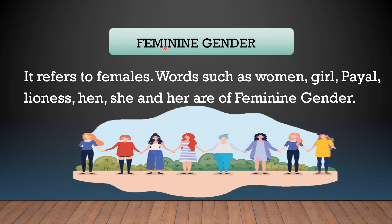Coming to the next: feminine gender. It refers to females. Words such as women, girl, Pile, lioness, hen, she and her are of feminine gender. This is a group of females. We call females as women, girl, Pile — Pile is a name of a girl. Lioness is a female lion. Then hen, she and her — these are feminine gender words.